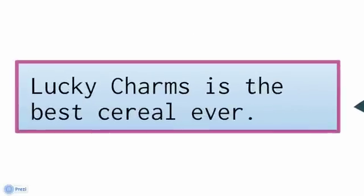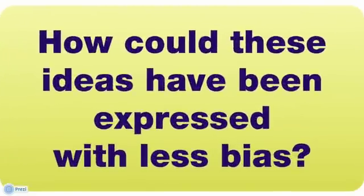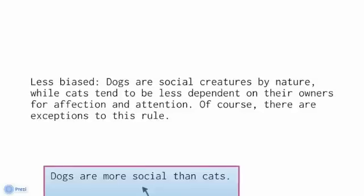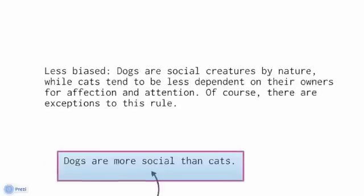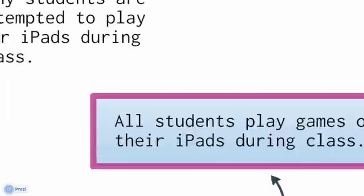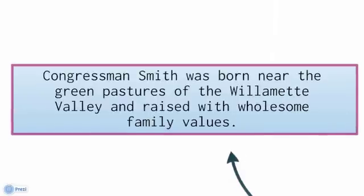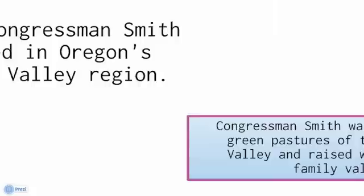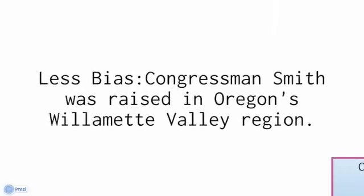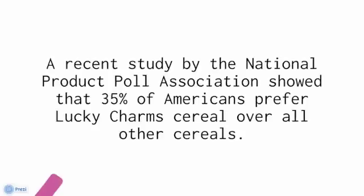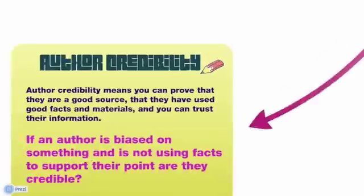My opinion example: 'Lucky Charms is the best cereal ever.' So how could these ideas be expressed with less bias? Instead of 'Dogs are more social than cats,' we could say: 'Dogs are social creatures by nature, while cats tend to be less dependent on their owners for affection and attention — of course there are exceptions.' Instead of 'All students play games on their iPads during class,' we say: 'Many students are occasionally tempted to play games on their iPads during class.' Instead of loaded language about Congressman Smith, we say: 'Congressman Smith was raised in Oregon's Willamette Valley region.' And instead of opinion, we use fact: 'A recent study by the National Product Poll Association showed 35% of Americans prefer Lucky Charms cereal over all other cereals.'